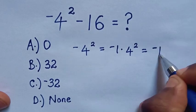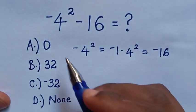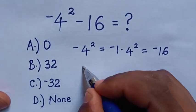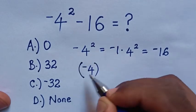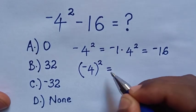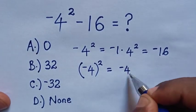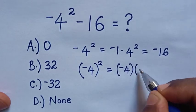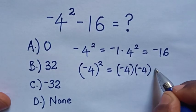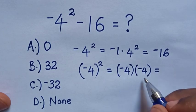16 times negative 1 is negative 16. If in this part is negative 4 brackets square, then it will be equal to negative 4 inside the brackets times negative 4 brackets is equal to 4 times 4 is 16.